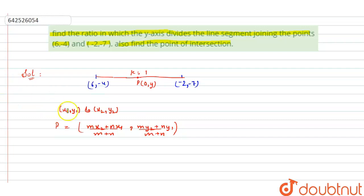So by using this we can find the coordinates of the point. Now as point P(0,y) divides the line segment into k is to 1, the coordinates of the point are: